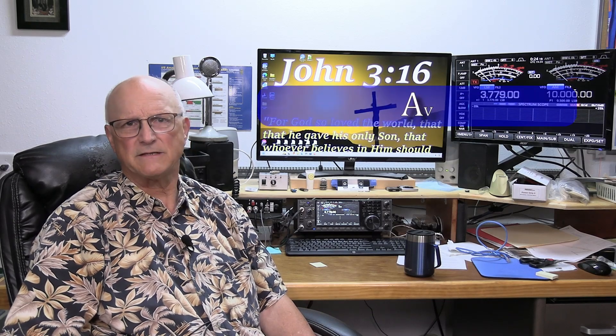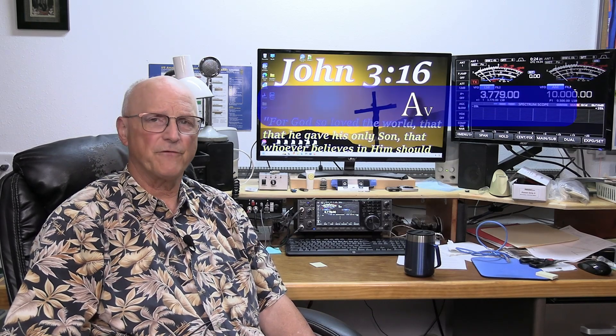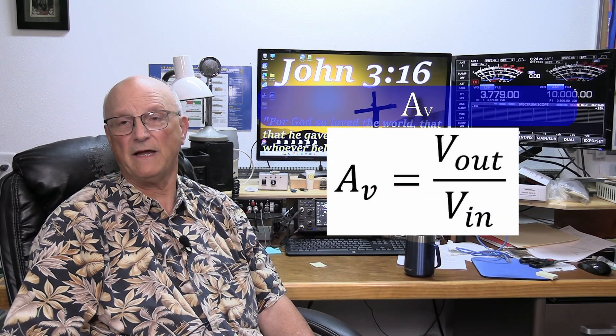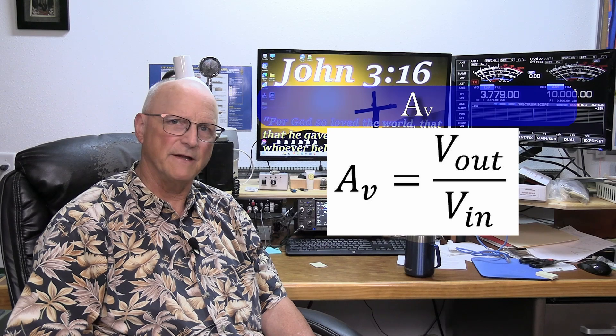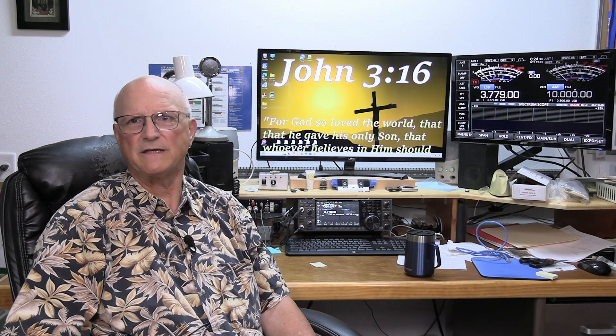Lastly, we have A sub V and it is referred to as the voltage gain of a circuit which is equal to Vout divided by Vin. Now, let's see how we can create a cascode amplifier with a designed-in fixed voltage gain.